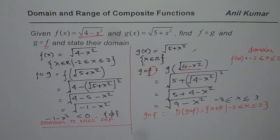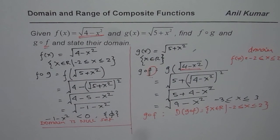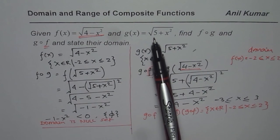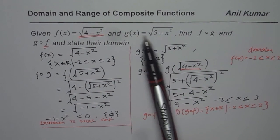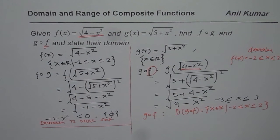Don't just look at the final answer — focus on how to find the domain. The domain of a composite function is a subset of the domain of the inside function, and the range of the inside function must lie within the domain of the outside function. I hope that helps to understand the concept. Thank you and all the best.